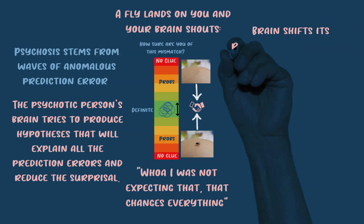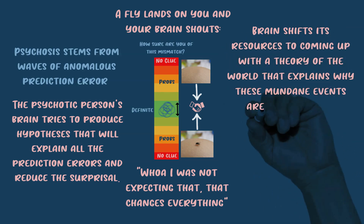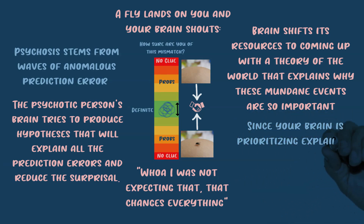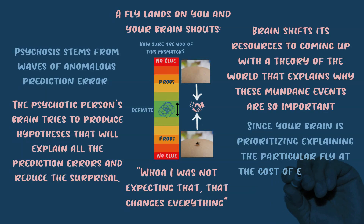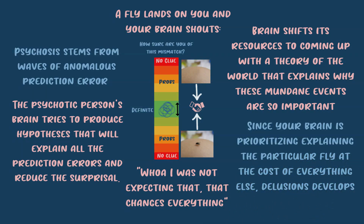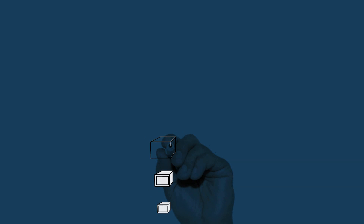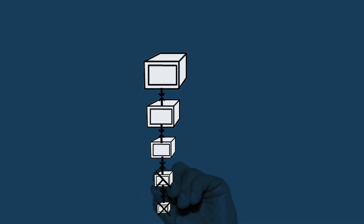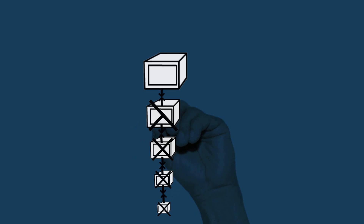Then imagine another completely mundane event happens and the brain again says 'I was not expecting that.' Imagine this happening 30 times in one day. Completely unconsciously, the brain shifts its resources to coming up with theories that explain why these mundane events are super important. Since the brain is prioritizing explaining each mundane event, sometimes it develops ideas and delusions that make no sense. As a psychotic person encounters more strange things, they almost rationally alter their high-level beliefs further and further, ultimately abandoning sane views of the world and adopting psychotic ones.